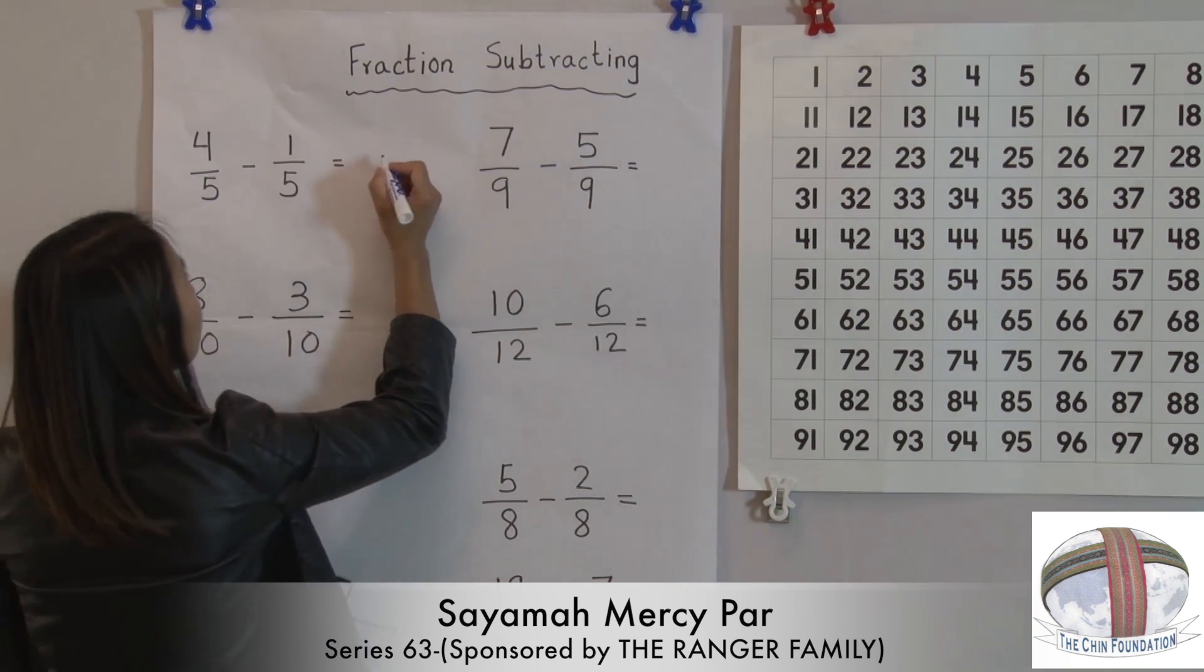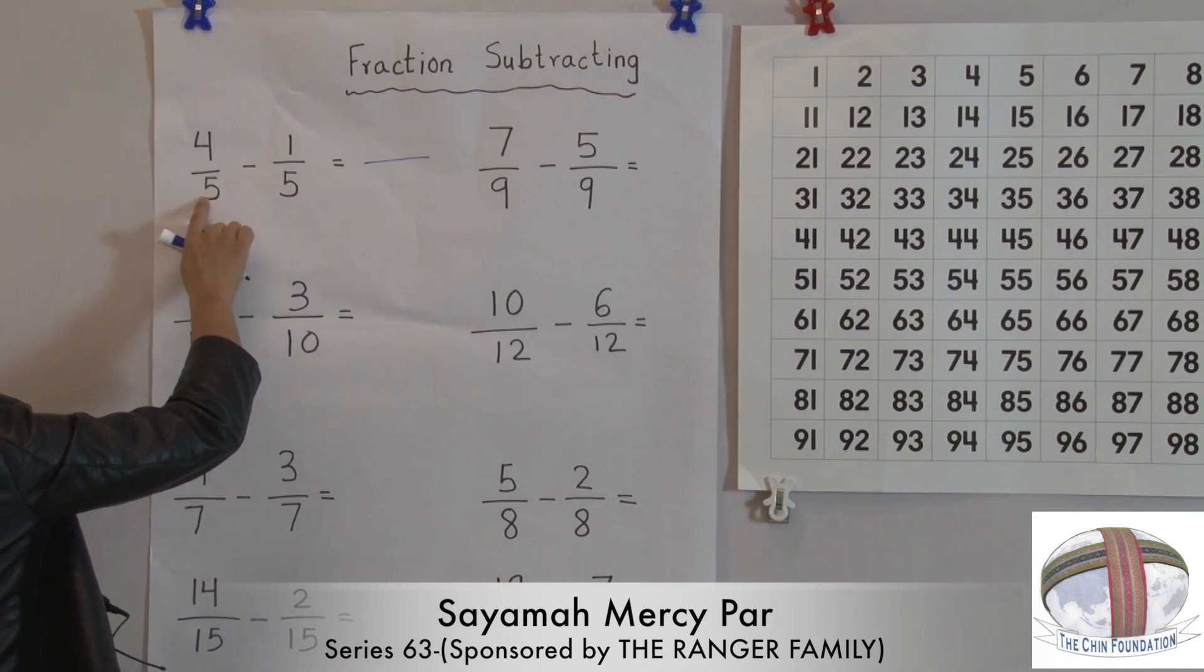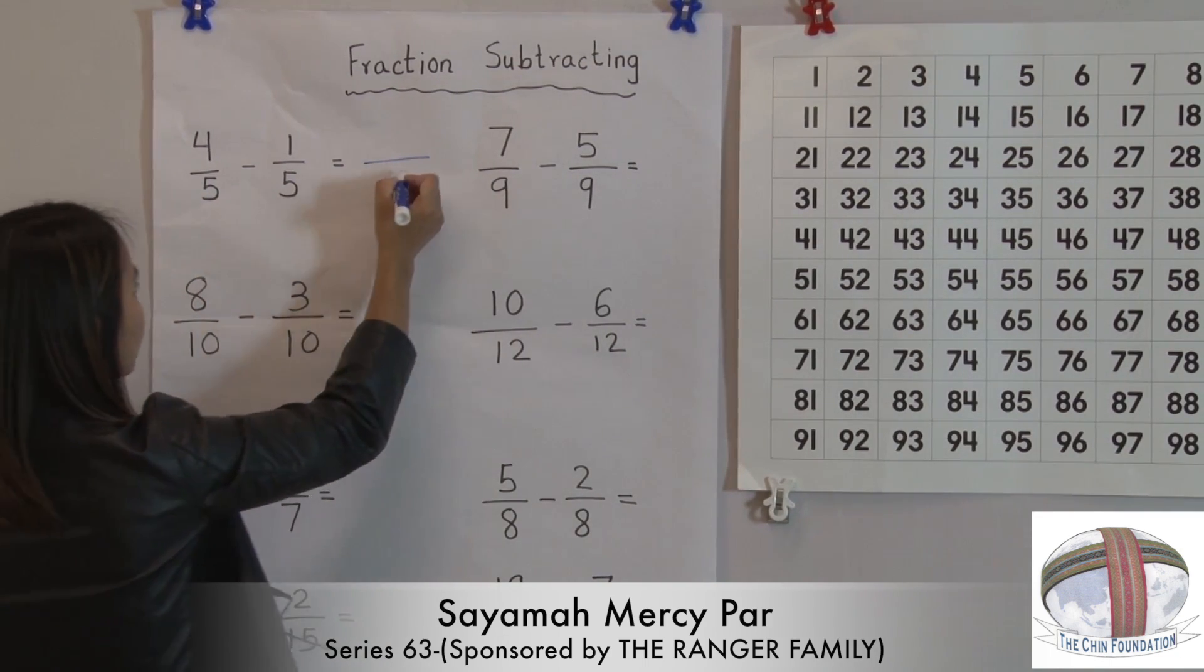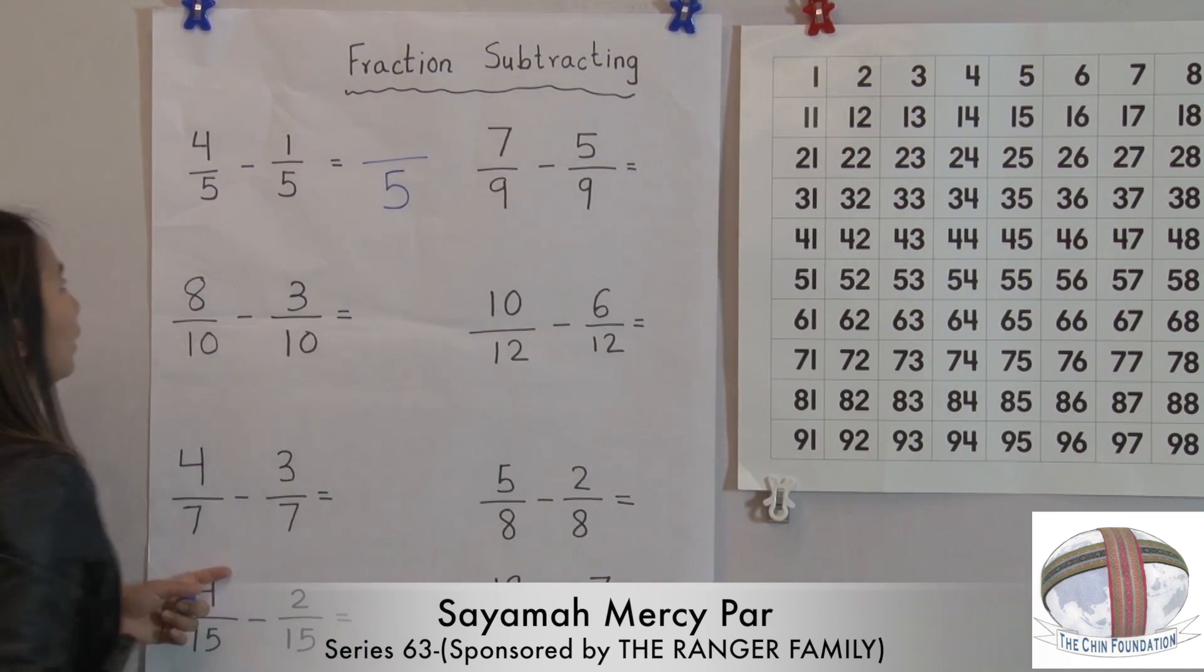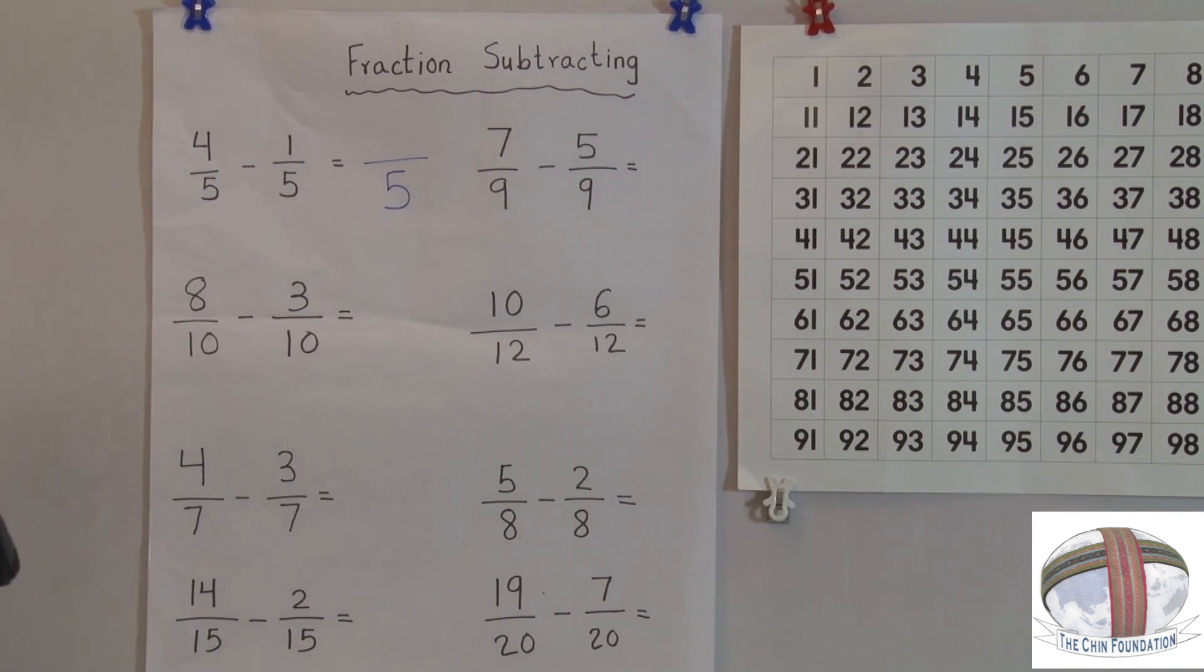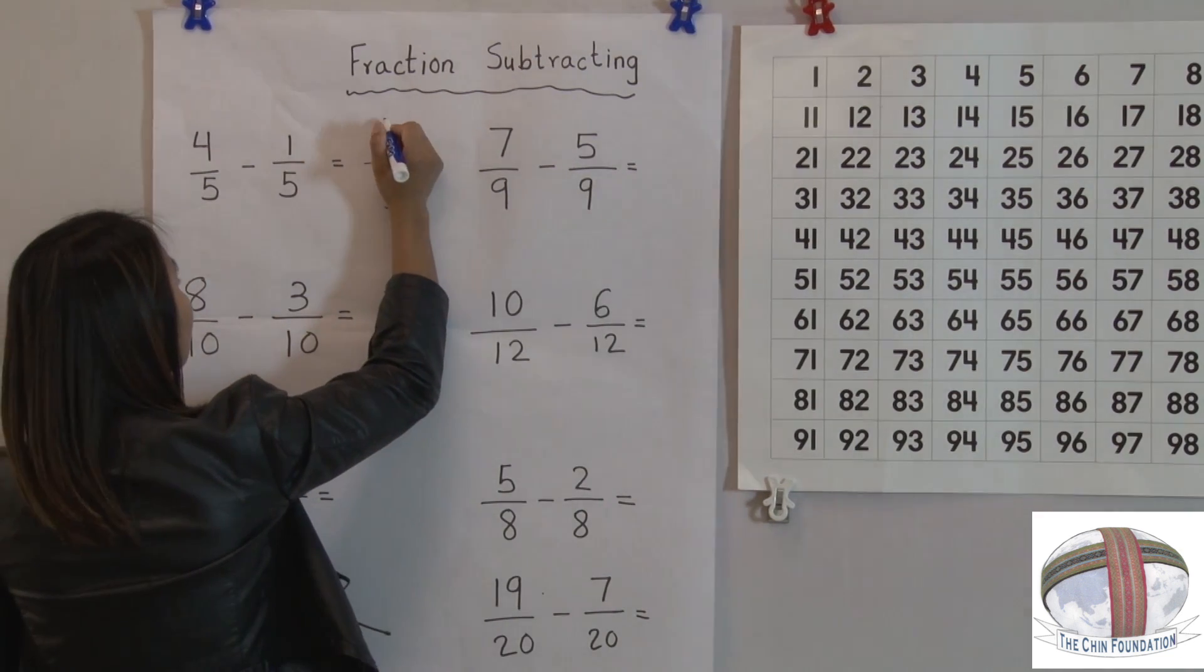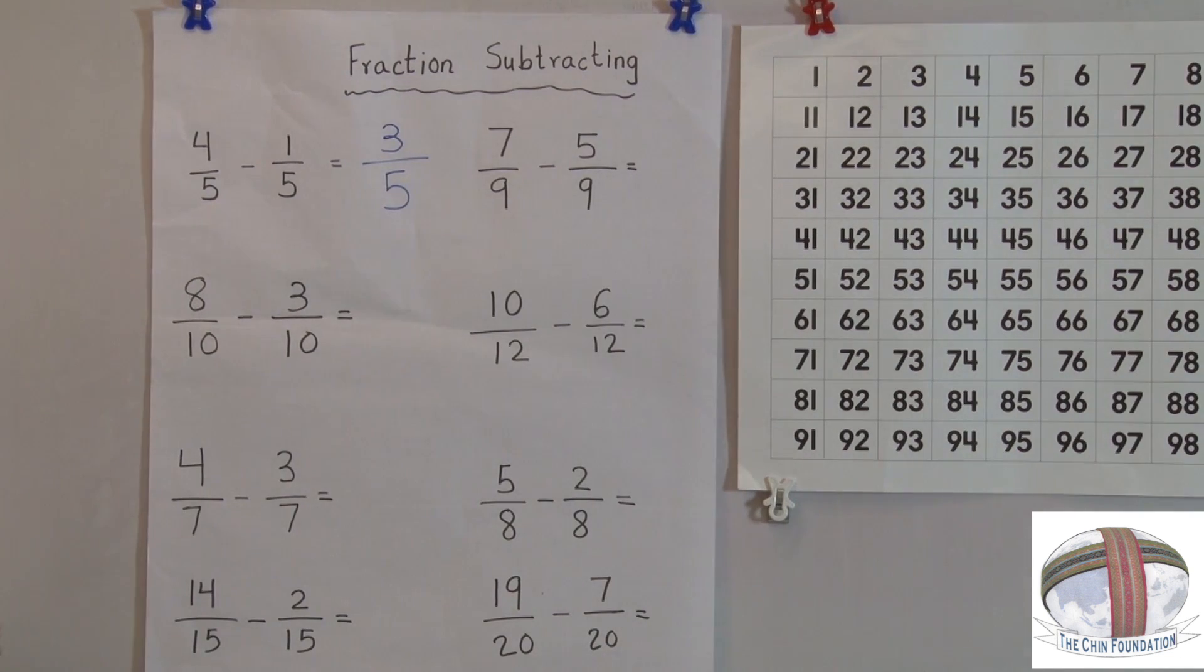So let's look at this one. So 5 is still stay the same. Now we need to minus 4 minus 1 is what? 4 take away 1 is 3. So your answer is this.